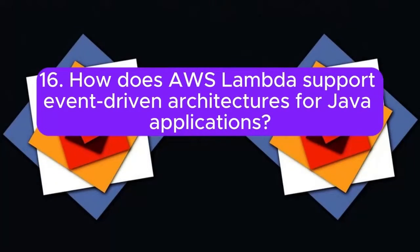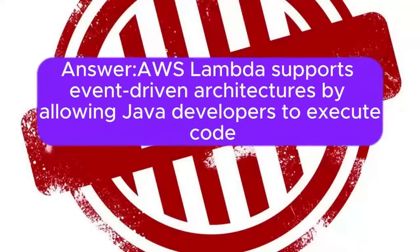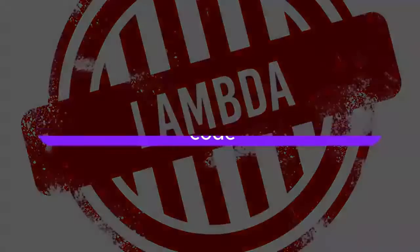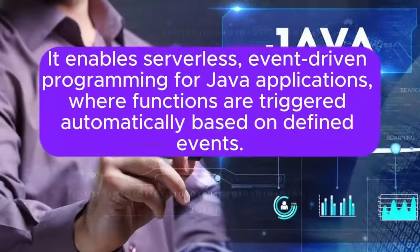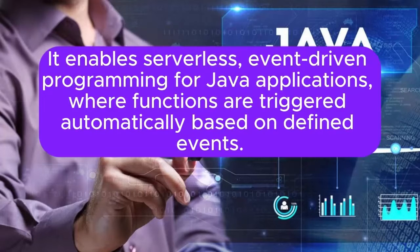Question 16: How does AWS Lambda support event-driven architectures for Java applications? AWS Lambda supports event-driven architectures by allowing Java developers to execute code in response to events from various AWS services or custom events. It enables serverless, event-driven programming for Java applications, where functions are triggered automatically based on defined events.